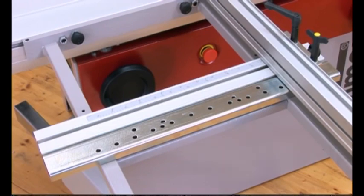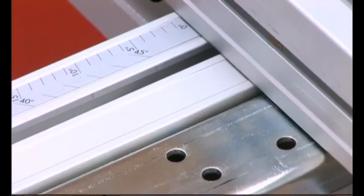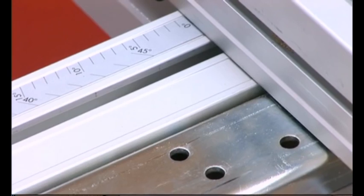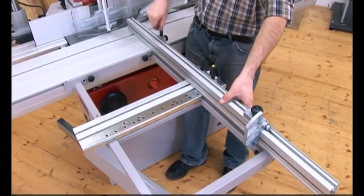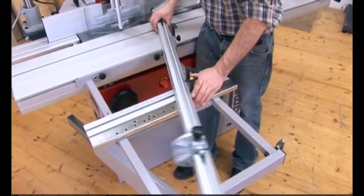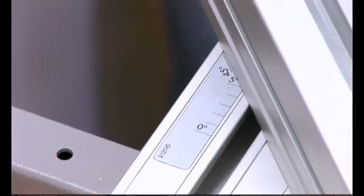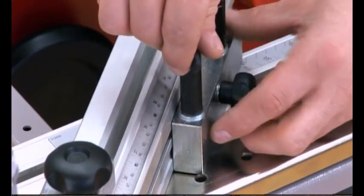The angle of the crosscut fence can be fixed at 5 degree intervals as well as at 22.5 degrees thanks to the miter pin indexing system. This ensures the highest possible level of precision and repeatability.